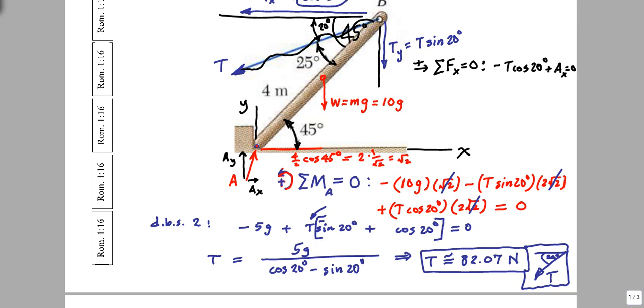And when you do that, out to a hundredths decimal place, I'm finding A x to be 77.12 Newtons, and it's oriented to the right.